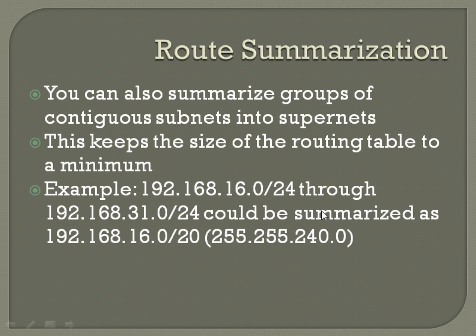This only works when the subnets are contiguous. If all of these are going to the same location, that's fine, but if, say, 192.168.30.0 slash 24 was going to another destination, you wouldn't be able to summarize it like that. You'd still be able to create a supernet with part of it, but you'd have to segment some of that out. Keep that in mind for route summarization and supernetting.